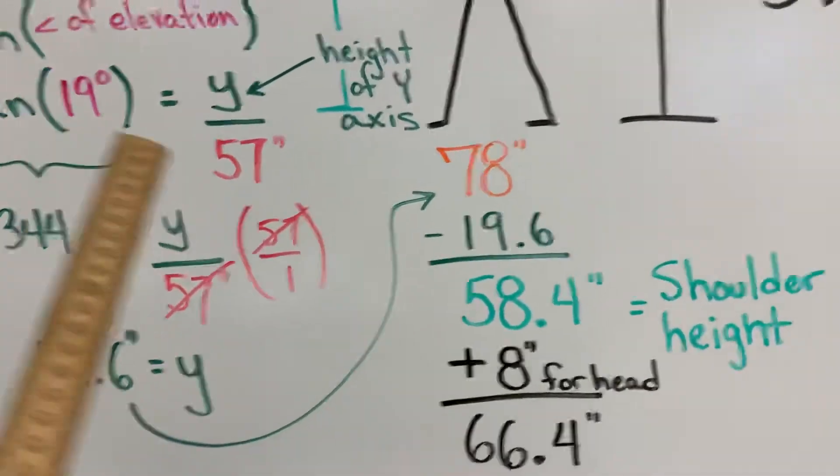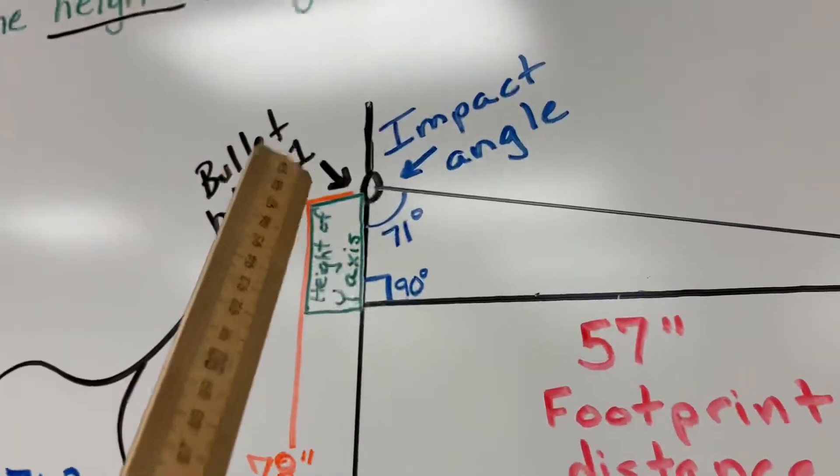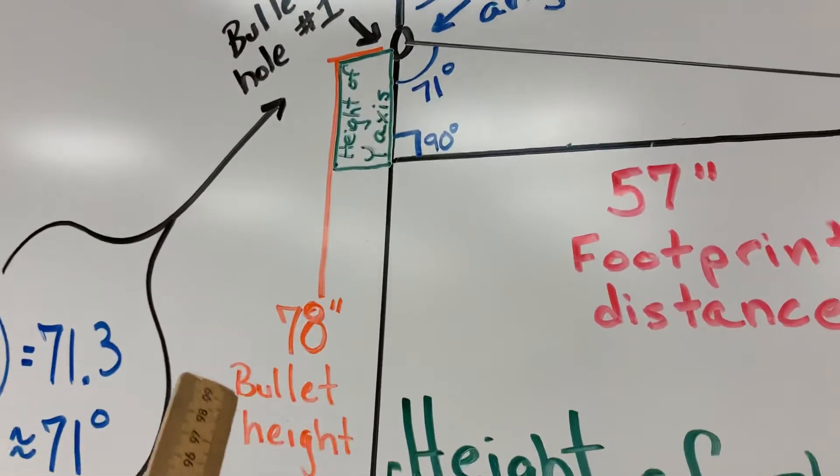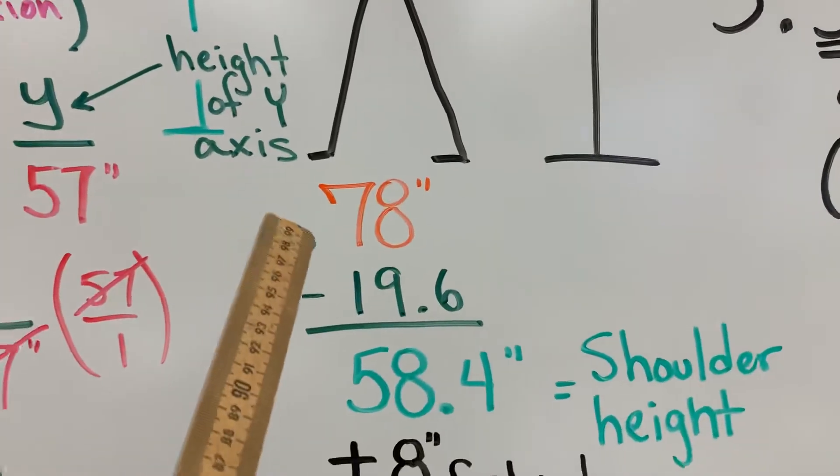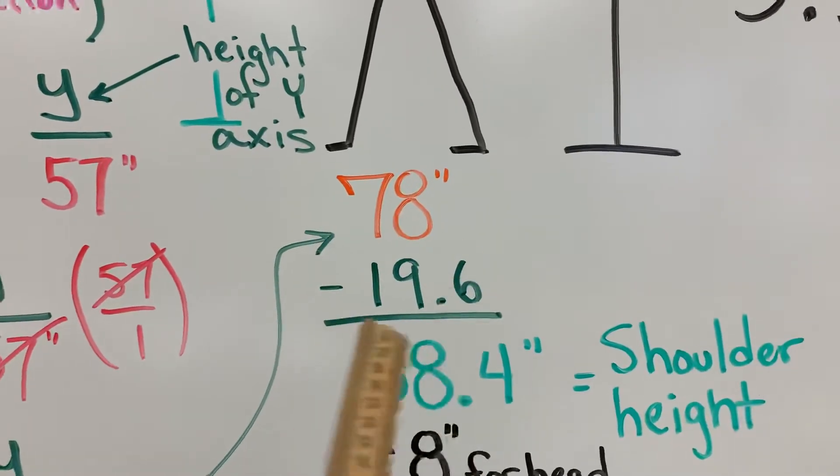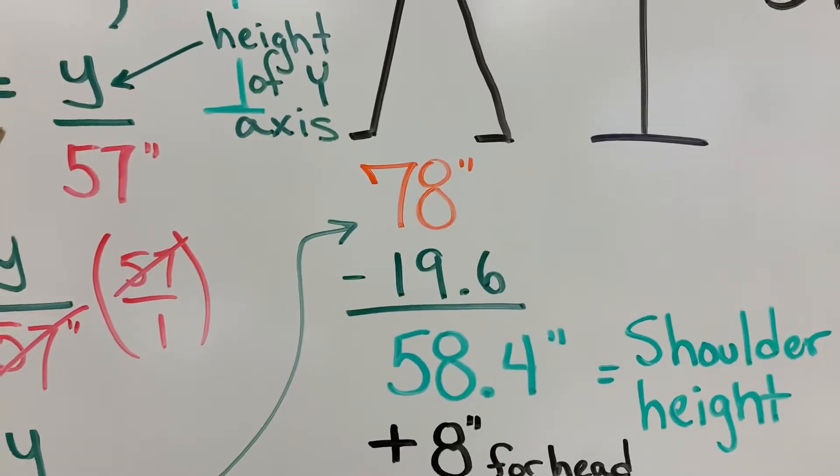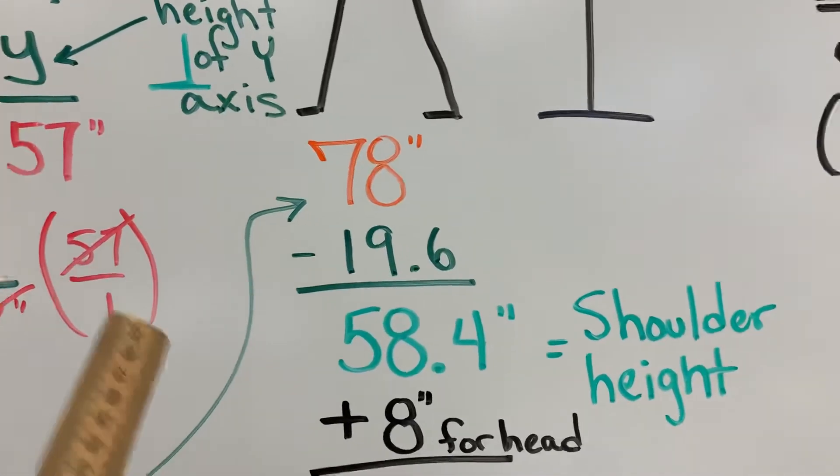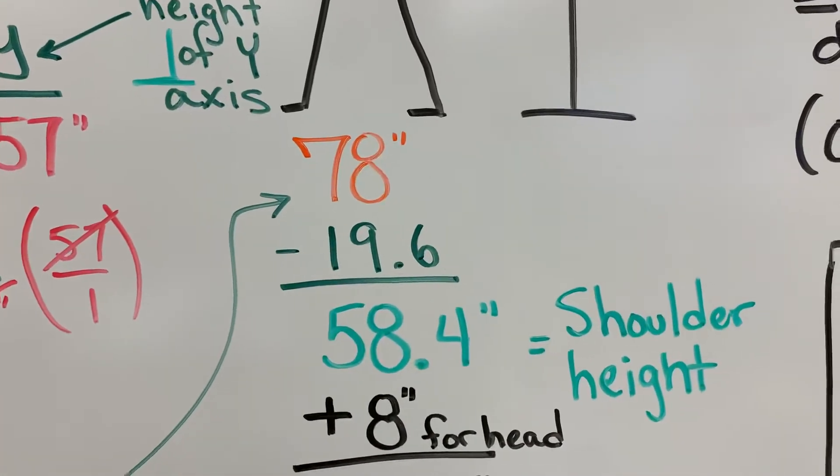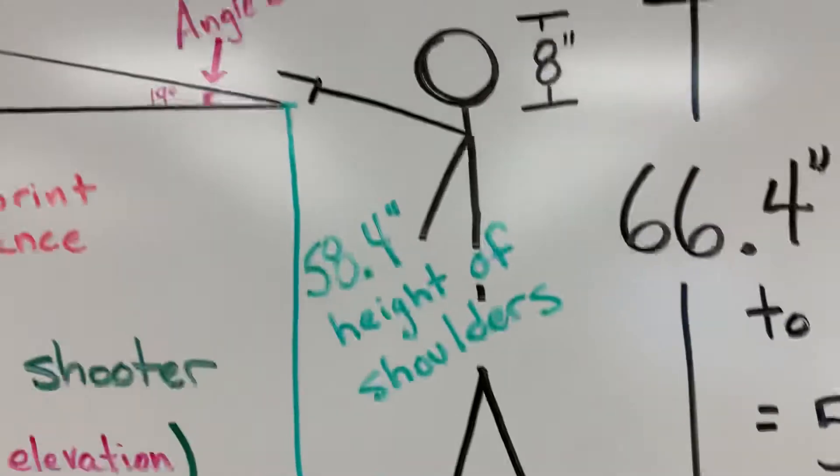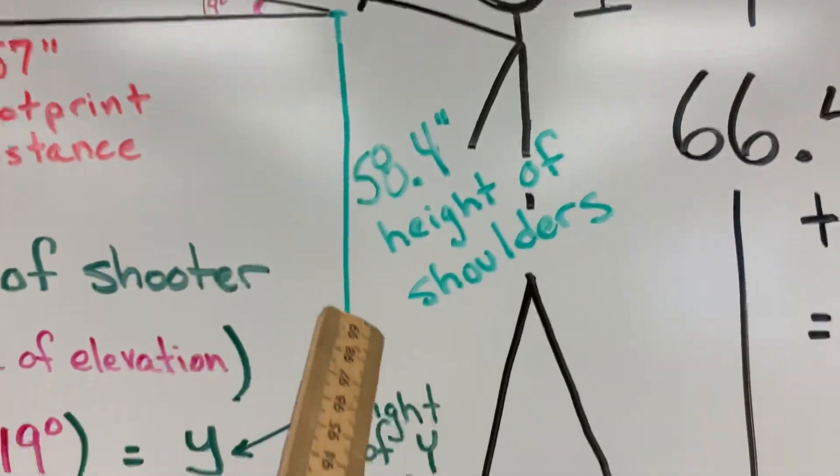Well, because I know the height of the bullet is 78 inches, you guys went out there in the hall and you measured the heights of the bullets. We can subtract that Y, that 19.6, from the 78, the height of the bullet. And that's going to give us the shoulder height, the approximate shoulder height of the shooter. So you'll see here kind of an approximate shoulder height of the shooter.